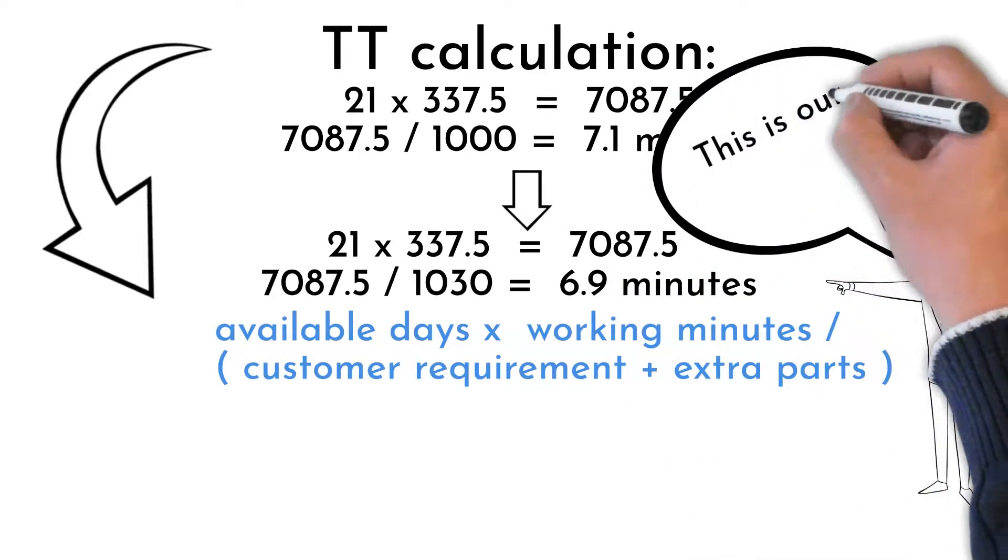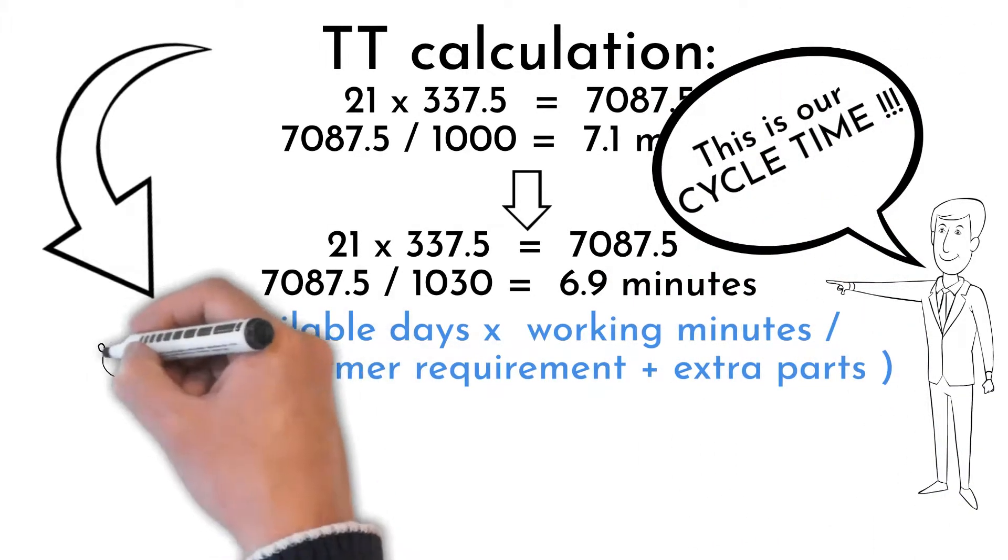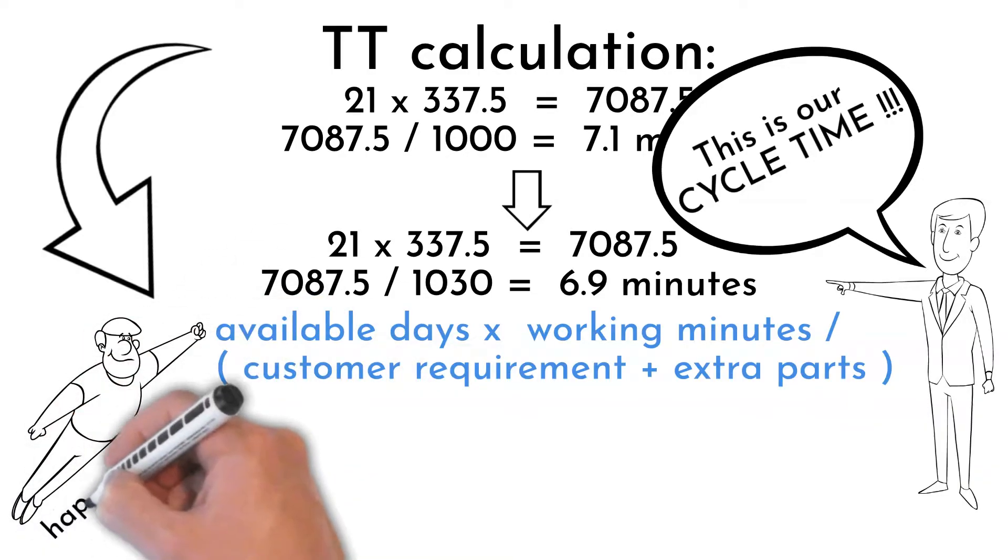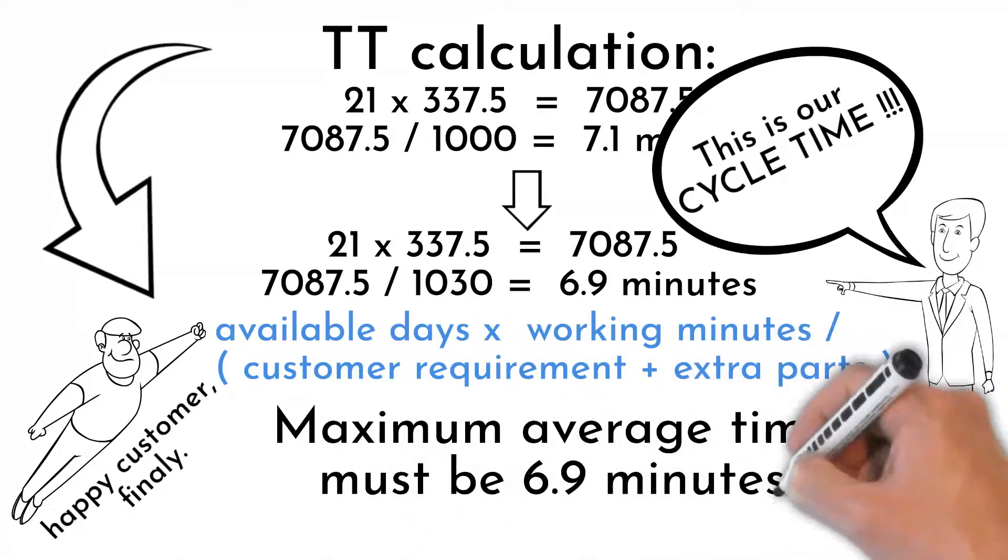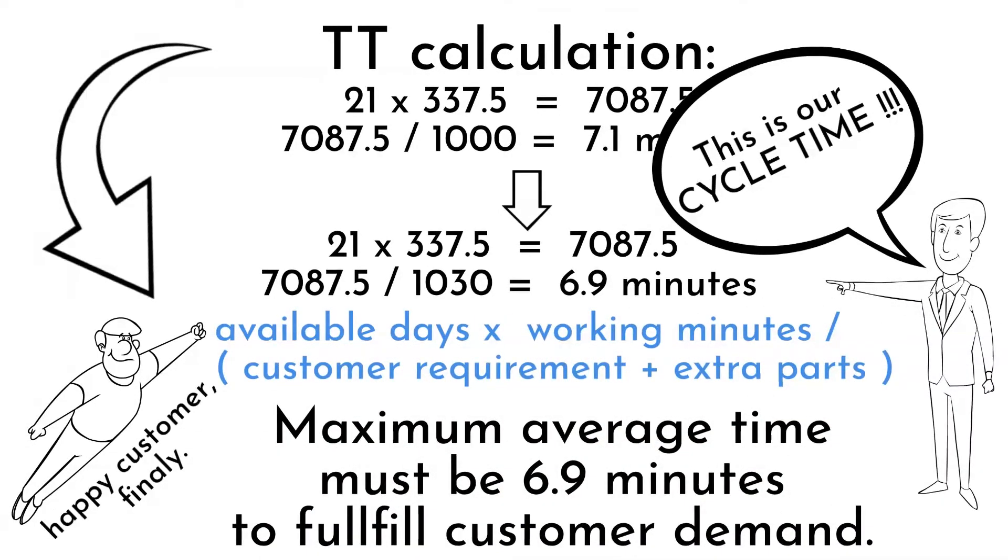In this case maximum average time our process must work is 6.9 minutes. If we exceed this number we will not be able to fulfill requirements in standard time. Therefore improvement or some change has to be done to get there.